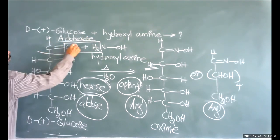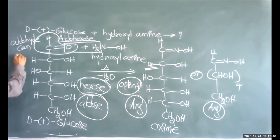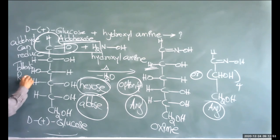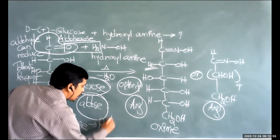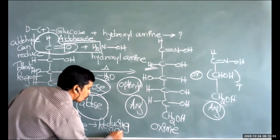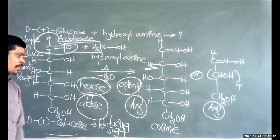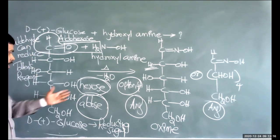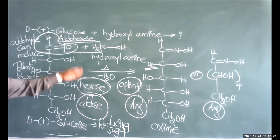Carbohydrates are classified based on taste into sugars (sweet) and non-sugars (not sweet). Glucose is a simple sugar, while sucrose (C12H22O11) — the table sugar — is a complex sugar. So sucrose is an example of complex sugar whereas glucose is an example of simple sugar.